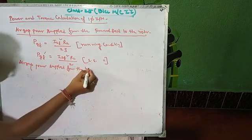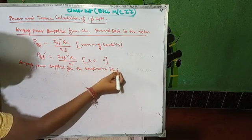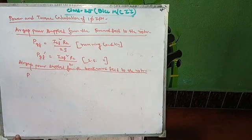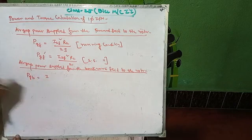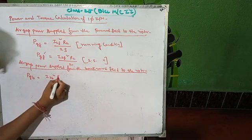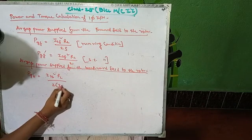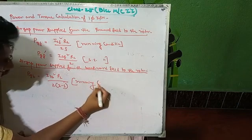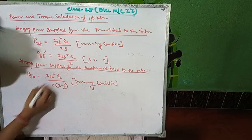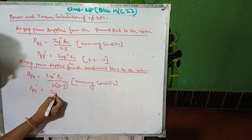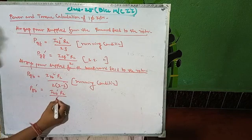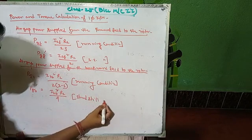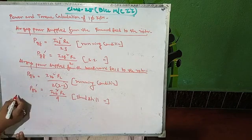Next, air gap power supplied from the backward field to the rotor — that will be P_gb — equals I2b squared times R2 divided by 2 times (2 minus s), because the slip for the backward field is (2 minus s) in running condition. At standstill condition, s equals 0, so the denominator becomes 4.